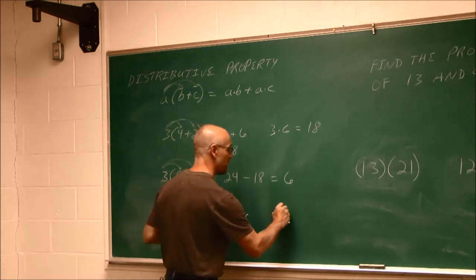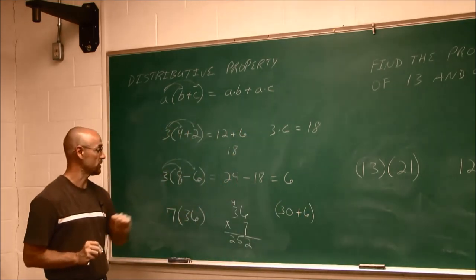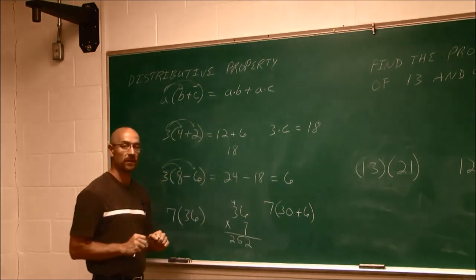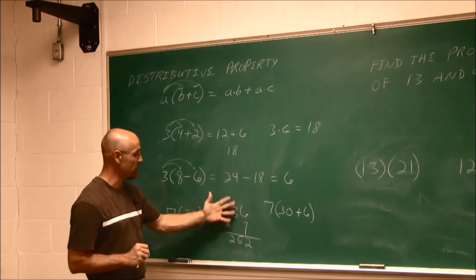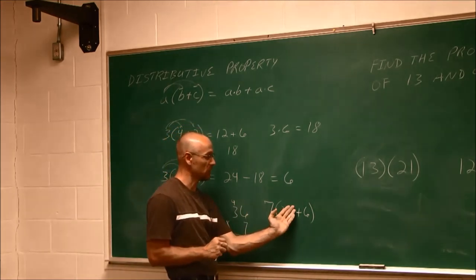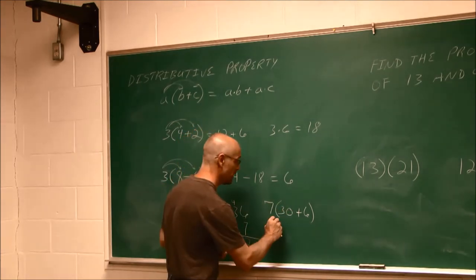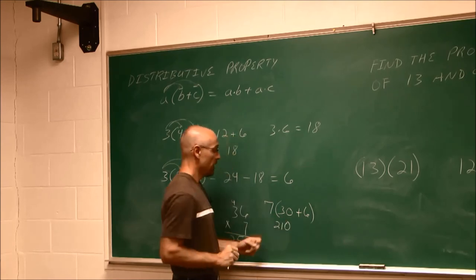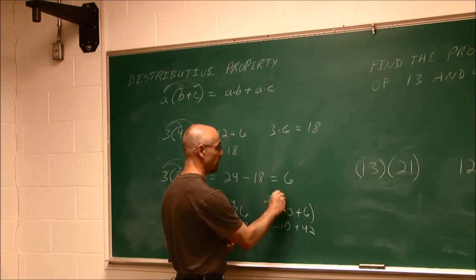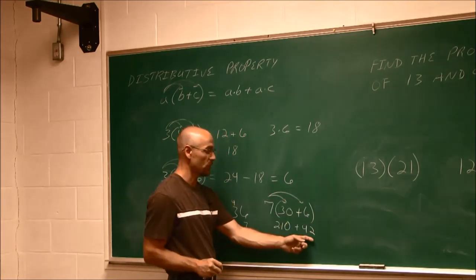Well, I can use the distributive property here to get that same value. I'm just going to take this number and think of this in expanded form. 36 is the same thing as 30 plus 6. Hopefully we all agree that that's the same thing as 36. And I can multiply it by 7. So instead of doing my math horizontally here, I can do it vertically. 7 times 30, well, let's just look at that 3 for a moment. 7 times 3 is 21 with a 0 on the end. And 7 times 6 is 42.